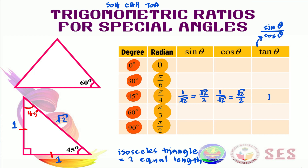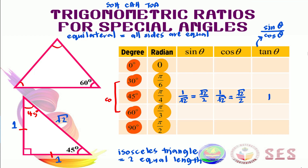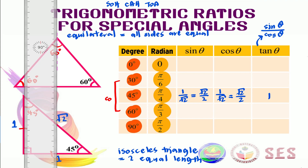Next, let's move on to angles 30 and 60, because these two angles are complementary to each other. For this pair, we're going to use an equilateral triangle, where all sides are equal. Because all sides are equal, all angles are equal too. Since the interior angles sum to 180 degrees and there are three sides, each angle is 60 degrees. To use this for trigonometry, we need a right-angled triangle, so we divide the equilateral triangle into two equal triangles.